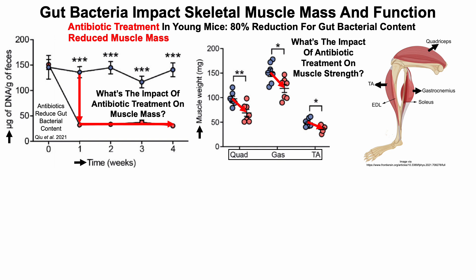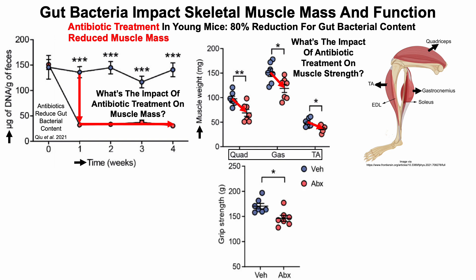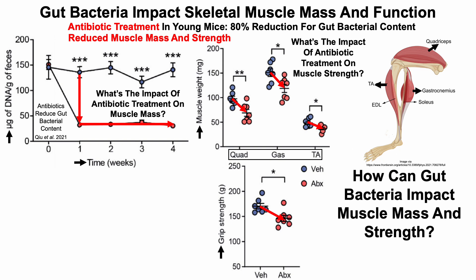What about the effect of antibiotic treatment on muscle strength? When looking at muscle strength in the non-antibiotic-treated versus antibiotic-treated mice, we can see that antibiotic-treated had reduced muscle strength, as indicated by grip strength. So we can conclude that antibiotic treatment in young mice reduces both muscle mass and strength.